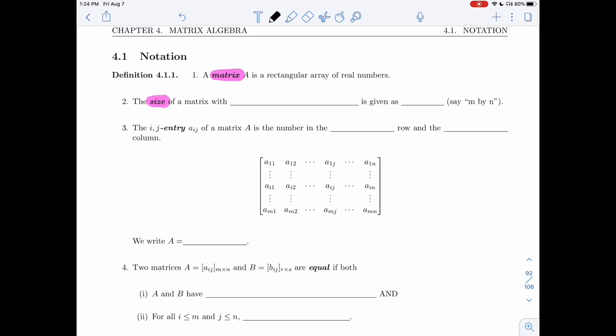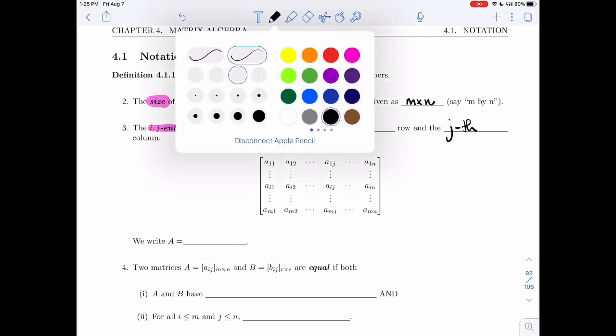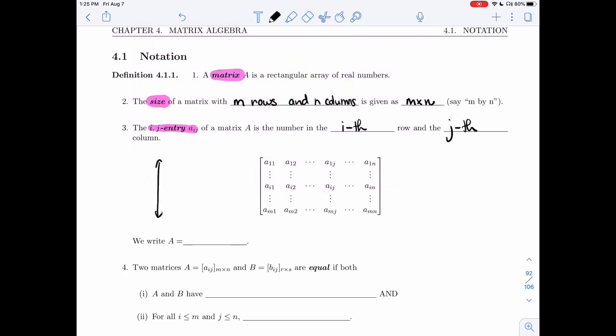The size of a matrix, if the matrix has m rows and n columns, is given as m by n. The ij entry, aij of a matrix A, is a number in the i-th row and the j-th column. So here, this matrix has m rows and it does have n columns. So it is an m by n matrix.